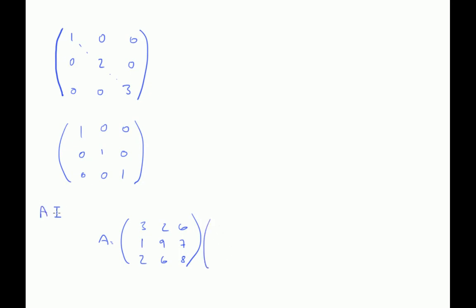One one one, zero zero zero, zero zero zero. So again, rows by columns. Three times one is three, two times zero is zero, six times zero is zero, so that's three plus zero is three.